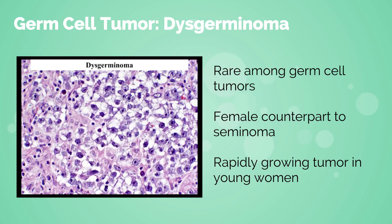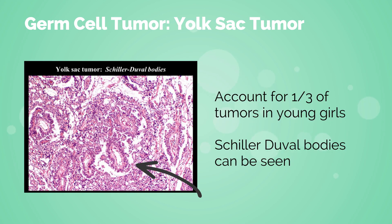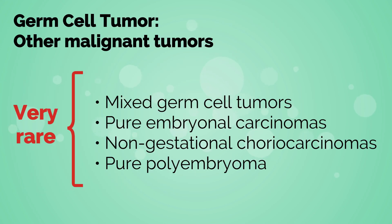There are several rare malignant germ cell tumors. This includes dysgerminomas, which are the female counterparts to the male seminomas — a rapidly growing tumor often seen in young women. Yolk sac tumors account for about one-third of the tumors in premenarchal girls; Schiller-Duval bodies can be seen in this tumor type. Finally, there are mixed germ cell tumors and the very rare pure embryonal carcinomas, non-gestational choriocarcinomas, and pure polyembryomas.